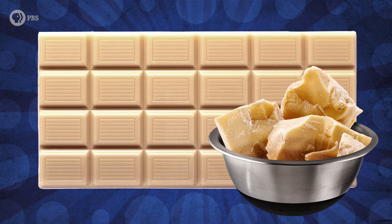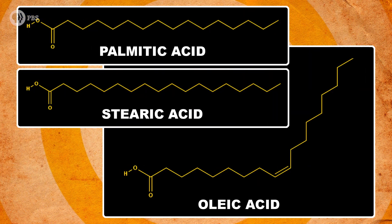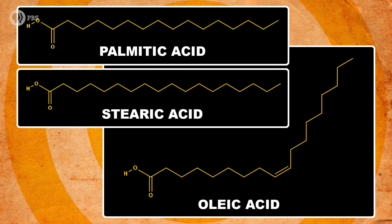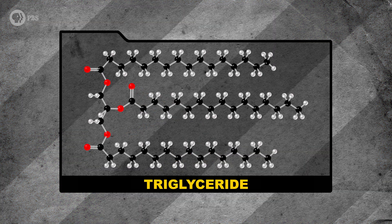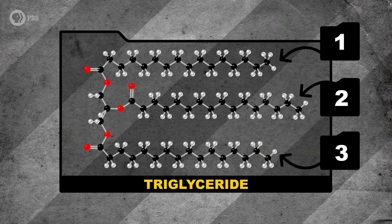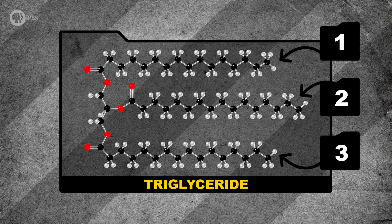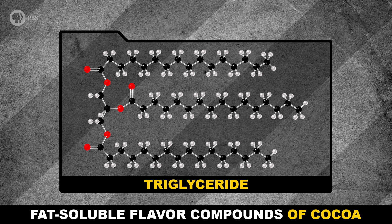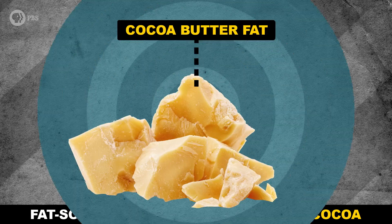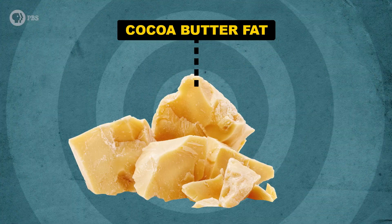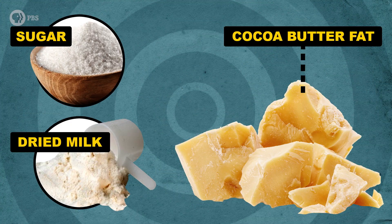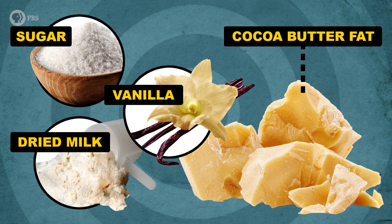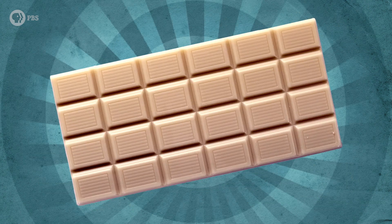Cocoa butter is mostly made up of the fatty acids palmitic acid, stearic acid, and oleic acid. Those fatty acids are tied up in groups of three, called triglycerides. They only contribute fat-soluble flavor compounds of cocoa, but mix those fats with sugar, dried milk, and vanilla for a much-needed flavor boost, and ta-da, we've got white chocolate.